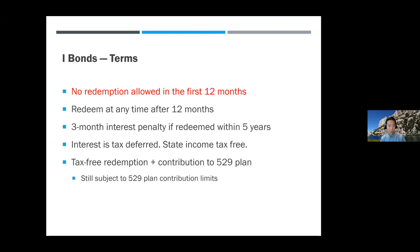If you redeem I bonds in a year when you also contribute to a 529 plan, you can put your I bonds into the 529 plan and avoid paying taxes that year. The money goes into the 529 plan for college expenses, and if you use it for college, it becomes tax-free. It's a roundabout way to invest in inflation-protected bonds within a 529 plan. When you contribute to a 529, the normal limits still apply — $15,000 per giver per recipient.